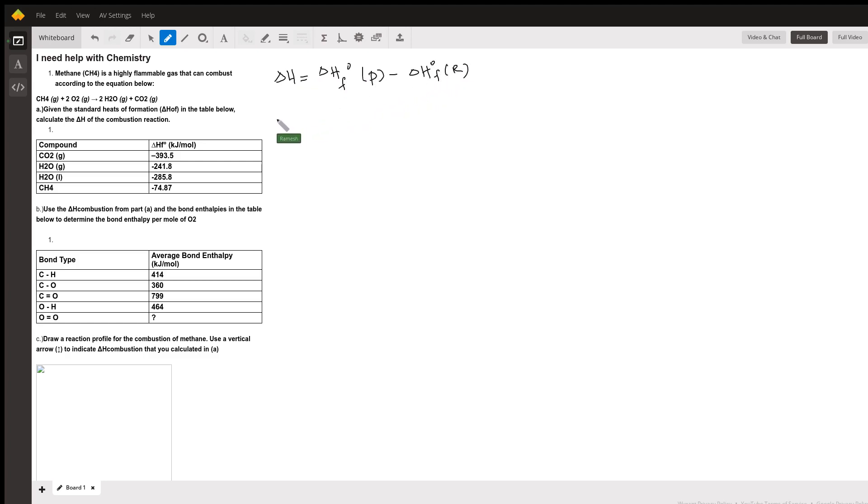So your products are 2 moles H2O. So standard enthalpy of formation of H2O value times 2 plus standard enthalpy of formation of carbon dioxide value times 1. So that's your products. Sorry, I forgot to write one.